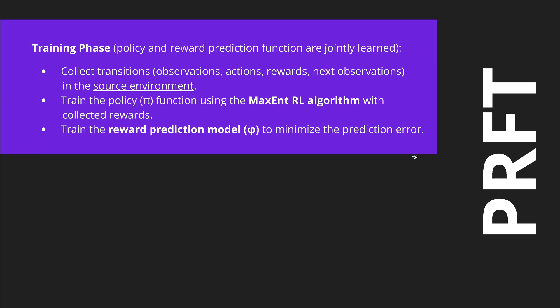We have two phases. In Phase 1, the source environment training phase, the policy and the reward prediction function are jointly learned. We collect transitions — observations, actions, rewards, and next observations — from the source environment. We train the policy using the maximum entropy reinforcement learning algorithm with collected rewards, and we train the reward prediction model to minimize the prediction error.